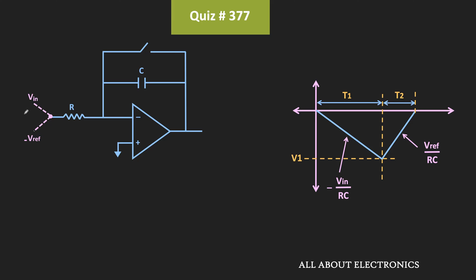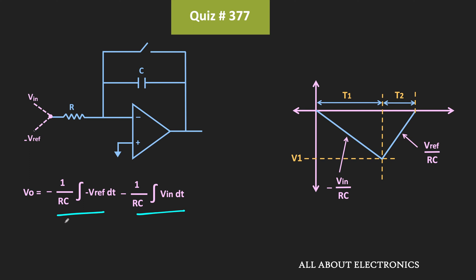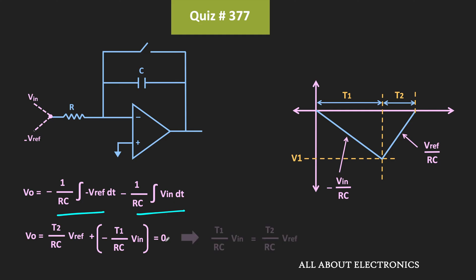So this time t2 depends on the input voltage. During the time t1 plus t2, the output of the integrator can be given by this expression. The integration time of the input voltage Vin is equal to t1, while the integration time of the reference voltage V_reference is equal to t2. Simplifying, we can write this as: t2 divided by RC times V_reference, plus minus t1 divided by RC times Vin. Since the overall output voltage of the integrator should be equal to 0, equating to 0 gives us t1 divided by RC times Vin equals t2 divided by RC times V_reference. Therefore, t2 is equal to t1 times Vin divided by V_reference.